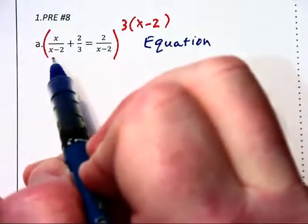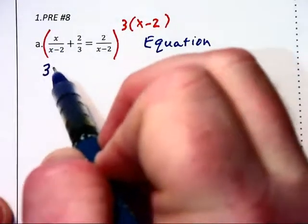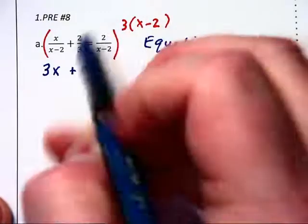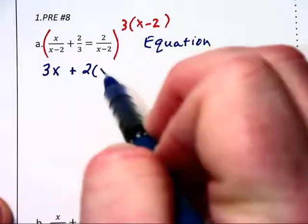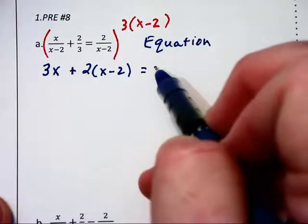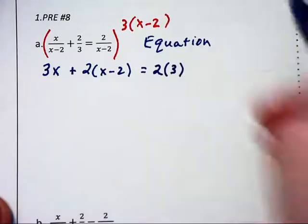On the left, the (x - 2) is canceled so you have x times 3 giving us 3x, plus in the middle the 3's are going to cancel leaving 2(x - 2), equals the right-hand side which had a 2 up in the numerator. It gets multiplied by 3 and the denominators disappear.